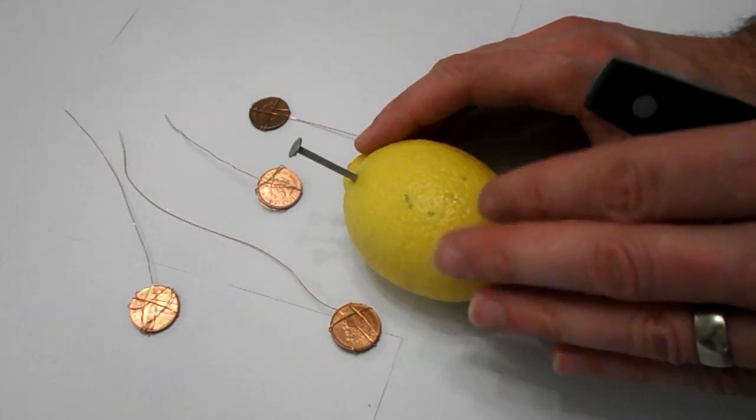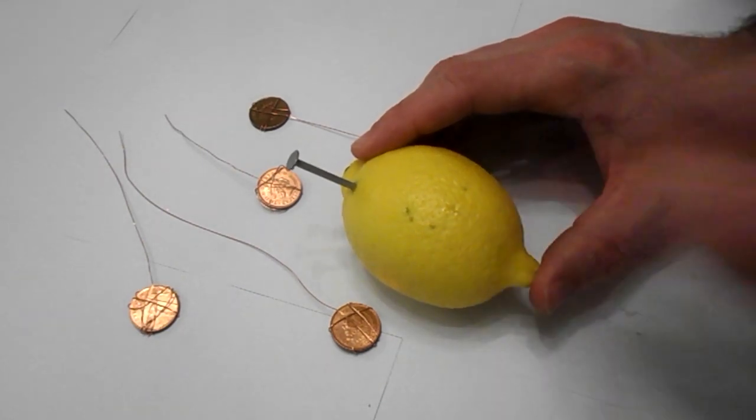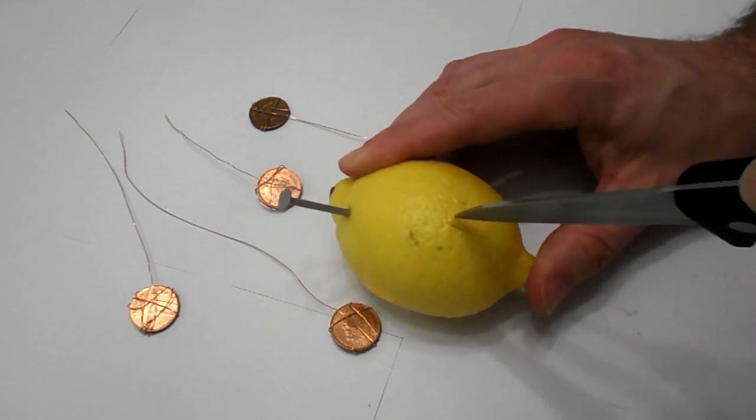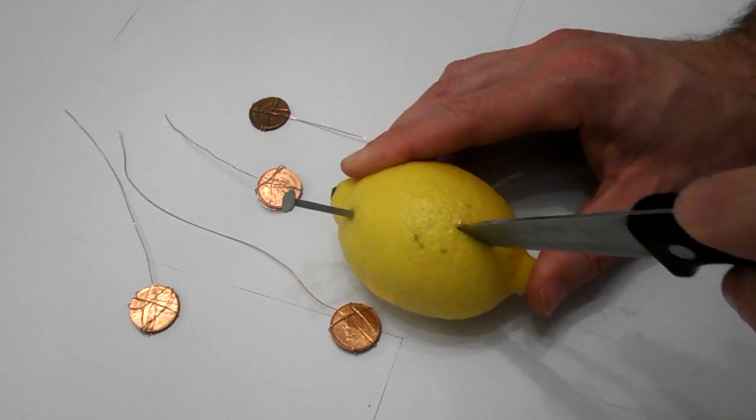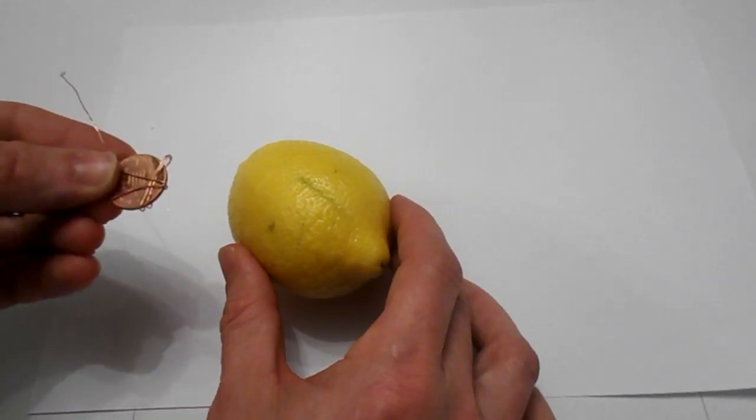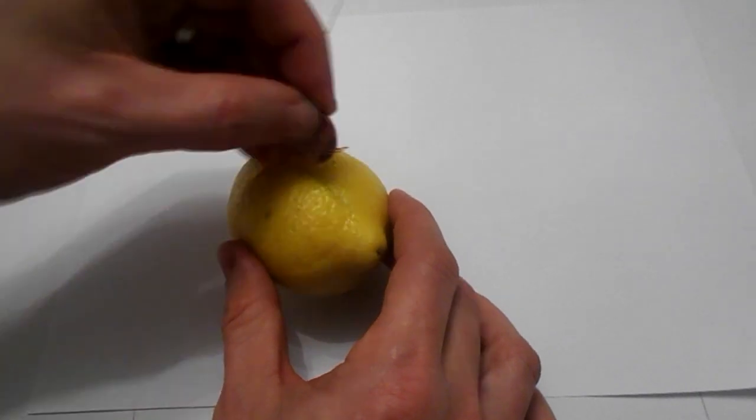If you're not using pennies, you can simply stick the wire in the other side of the lemon. Or if you're using pennies, just get a knife and cut a little hole in one side. Stick the penny with the wiring on it into the lemon itself.